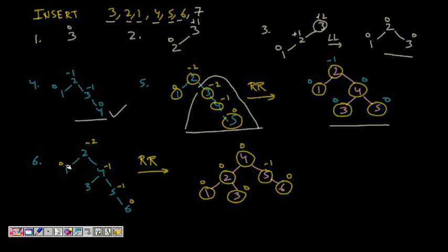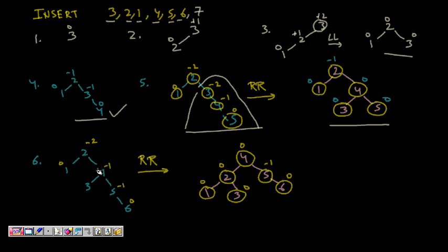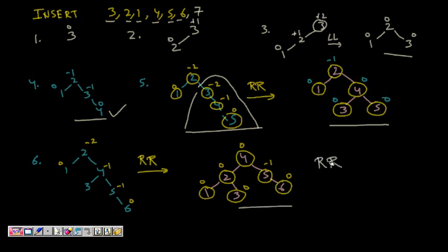Insert 6 — going up from the inserted node: 5 has balance factor -1, 4 has -1, and root 2 gets -2, violating AVL. Node 6 was inserted in the right subtree of the right child of node 2 — RR rotation again. Node 4 becomes the overall root, 5 and 6 go to its right, 2 becomes its left child, 1 stays, and 3 becomes the right child of 2. This shows that LL and RR type insertions can be handled by a single rotation.